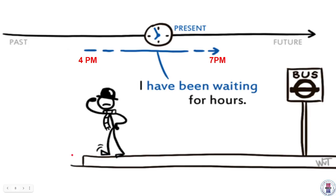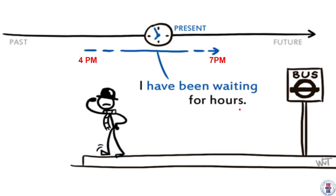Another situation: let's say you started waiting for the bus at 4 p.m. and now it's 7 p.m. You say: 'I have been waiting for hours.' Present perfect continuous, because you started at 4 and now it's 7 and you are still waiting for the bus.